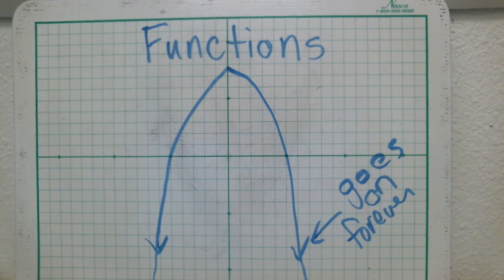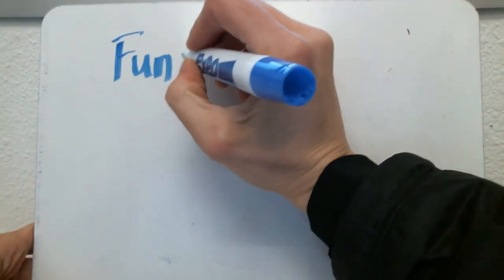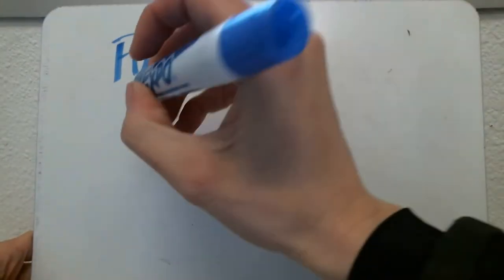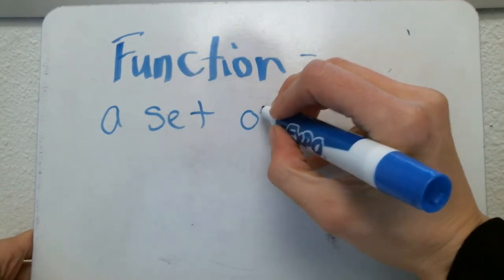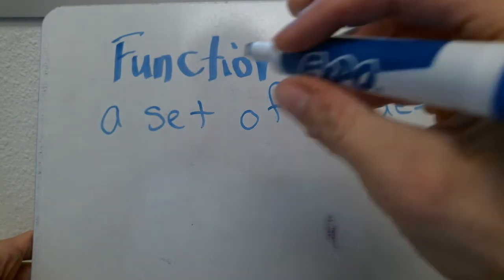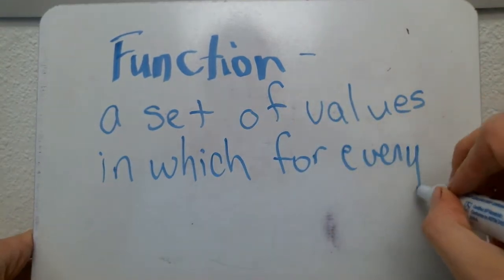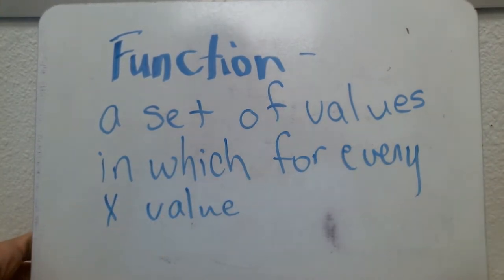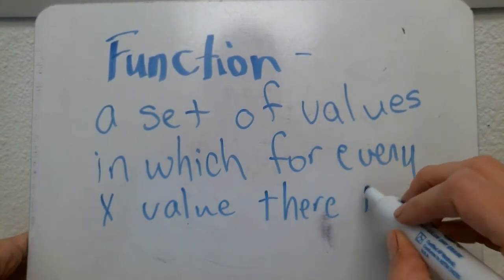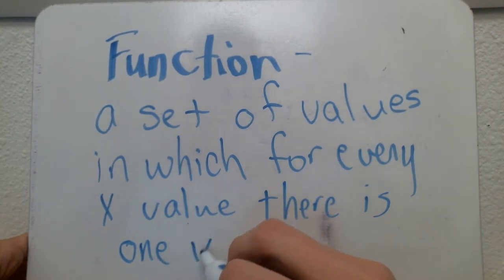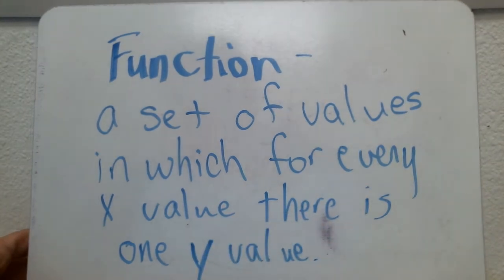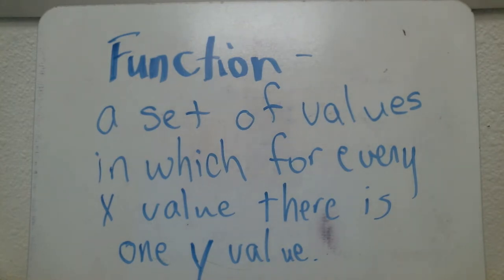You'll learn much more about functions in future math classes. A function is a set of values in which for every x value, there is one y value. So what we're looking at is that for every x, there is exactly one y. I'm going to show you on the graph what that looks like.